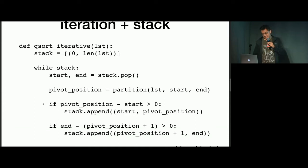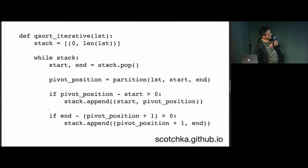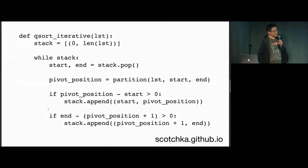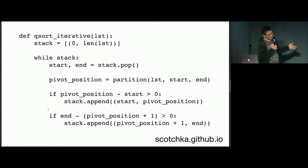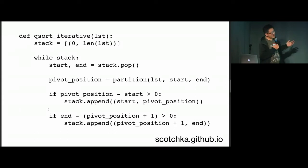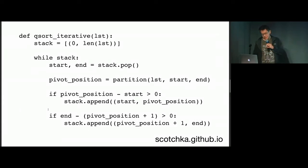And as long as the stack is not empty, we pop off the first element of the stack, which is start and end. We partition as before, and as long as the left or right part is not empty, we add it back to the stack. And this does the same thing as the previous version, so you can always do this.